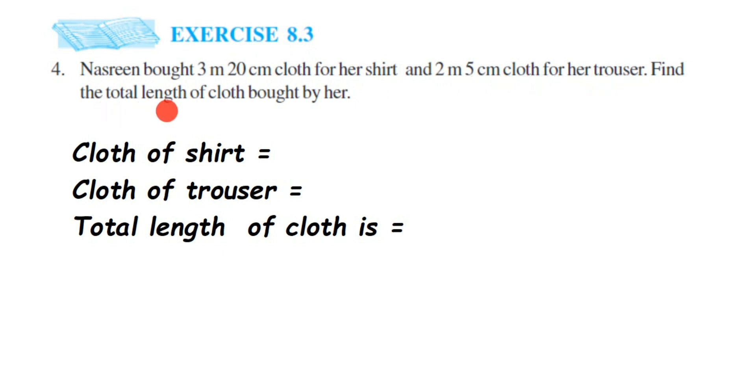So she bought a cloth of 3 meter 20 centimeter for her shirt and 2 meter 5 centimeter for her trouser. We have to find out the total. Total means we have to add up, so we're going to write up what we know from the question.